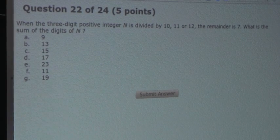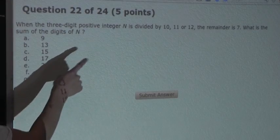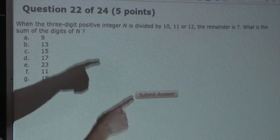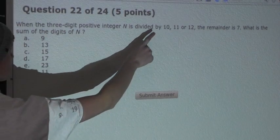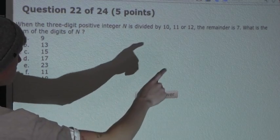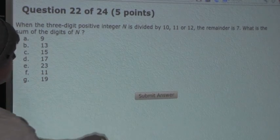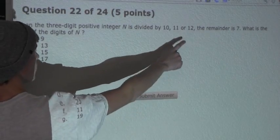Okay, now from the question, we know that this number n must be 7 greater than a multiple of 10, 7 greater than a multiple of 11, and 7 greater than a multiple of 12.